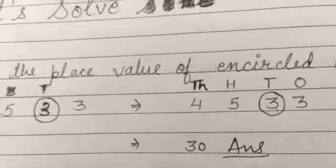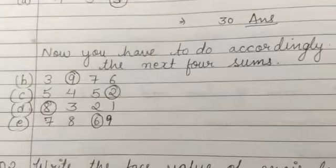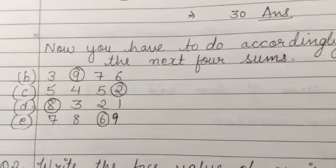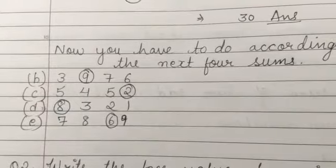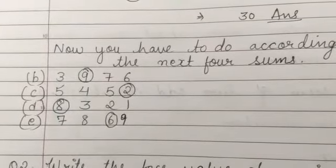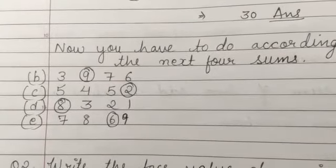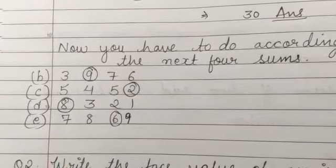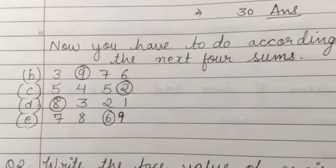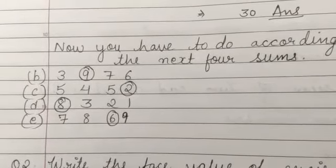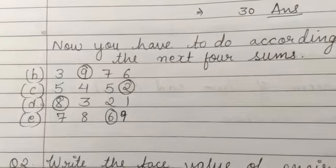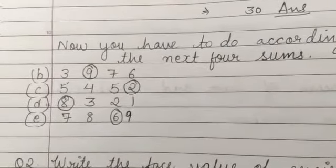Now you will solve four questions on your own. The questions are: 3976 with 9 circled; 5452 with a digit circled; 8321 with a digit circled; 786 with 9 circled. Try to solve them, and in the next section I will tell you the answers.